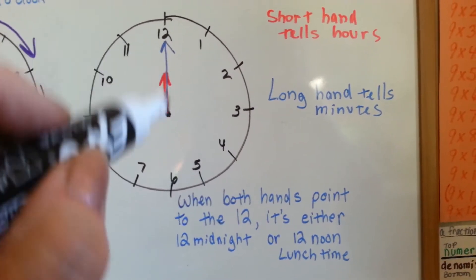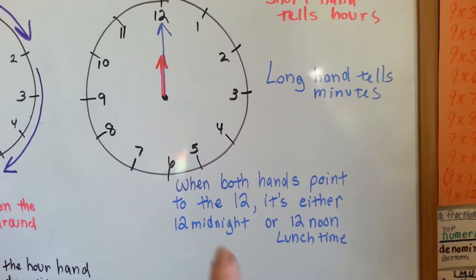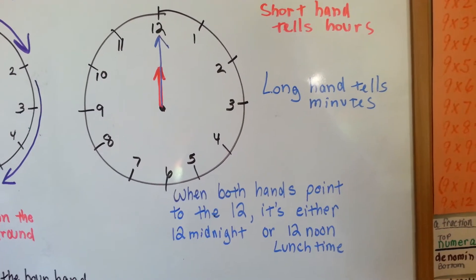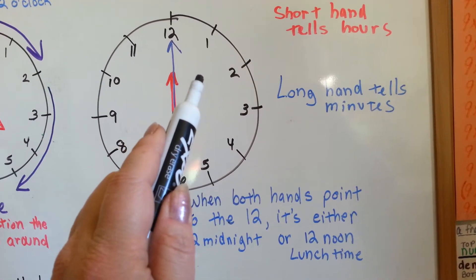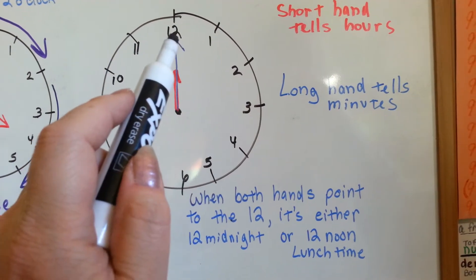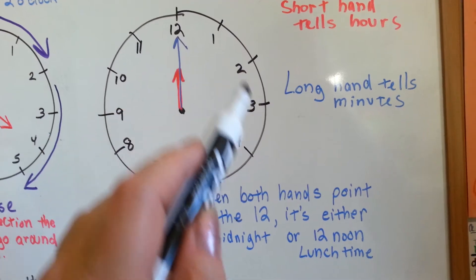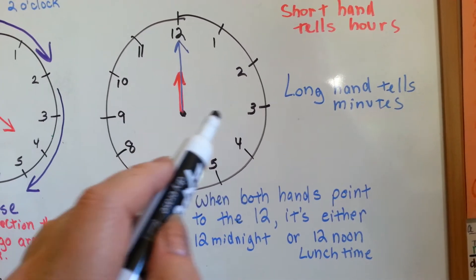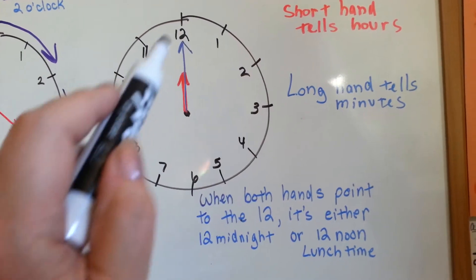Two times a day, the hands point to the 12 like this, in the middle of the night and at lunchtime. And the very next thing this red minute hand does is it moves to the 1 when the blue one goes all the way around. Then the blue one will go around again and make the red one point to the 2, and again to the 3. And it does that all day long, two times going past the 12.